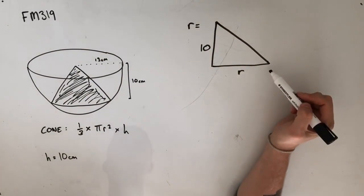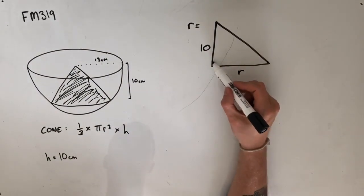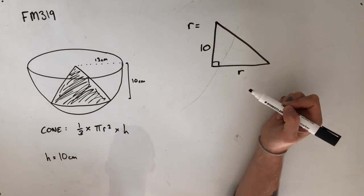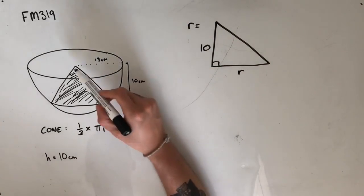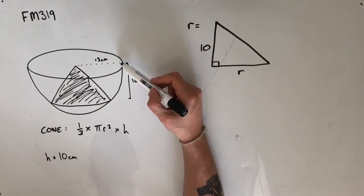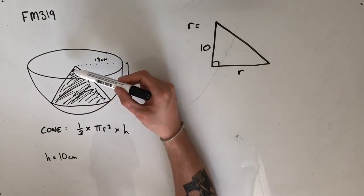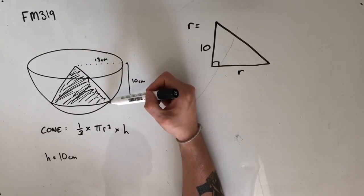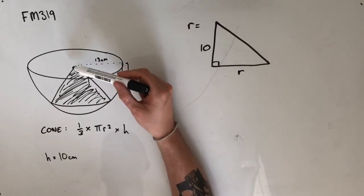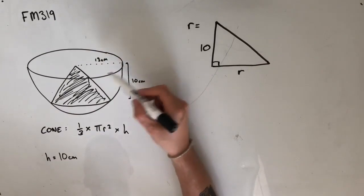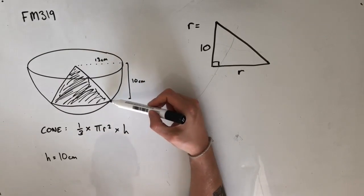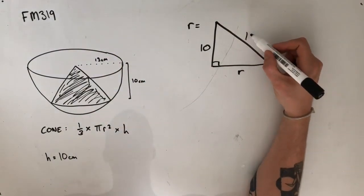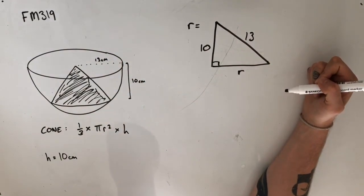However, the hypotenuse of this right angle triangle is going to be a little bit harder to figure out. We know that the radius of this bowl is 13 centimetres, which means that any line that goes from the centre to the outside of this bowl is also going to be 13 centimetres long. So the point from the centre of this pile, the tip of this cone to the bowl, is also going to be 13 centimetres long here.